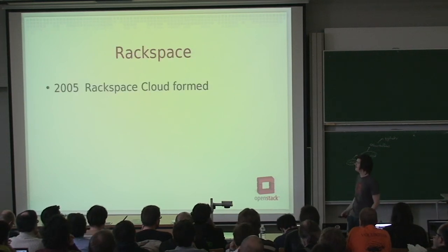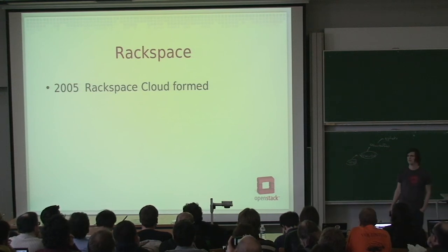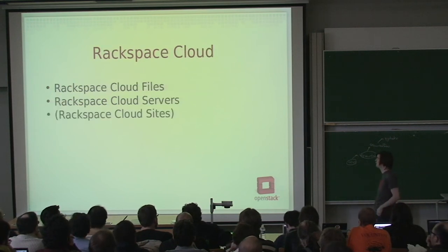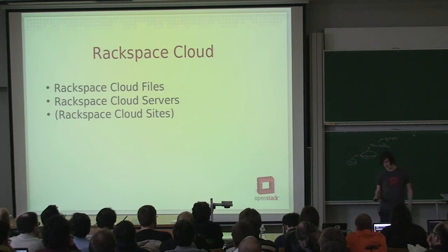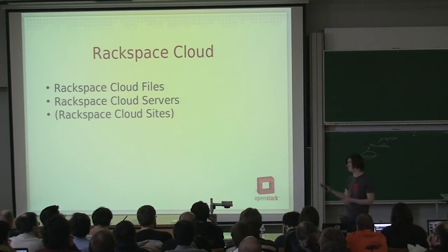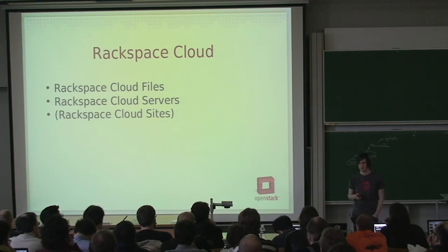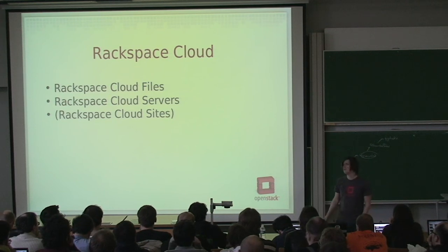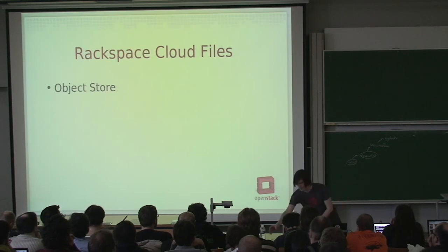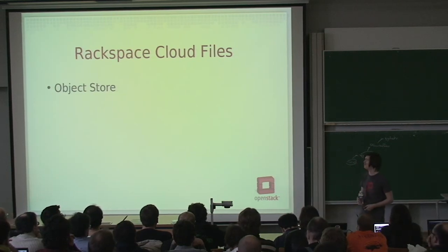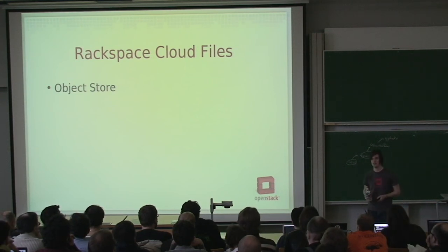Rackspace got into the infrastructure-as-a-service business back in 2005. There are two major components to the Rackspace cloud infrastructure: Rackspace Cloud Files and Rackspace Cloud Servers. They also have something called Cloud Sites, but that's a completely different story. First of all, there's Rackspace Cloud Files. It's an object store, which means that you can store objects in it and retrieve them again at a later time.